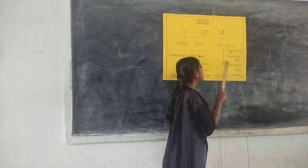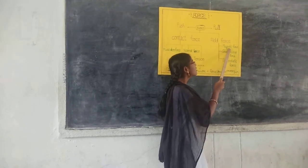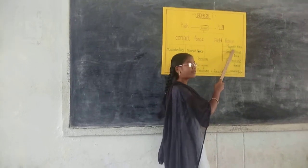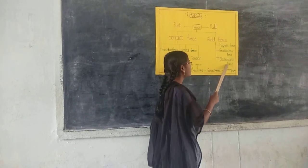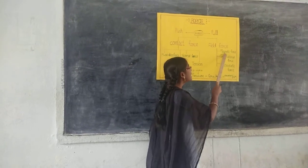Field force is of three types: one is magnetic force, second is gravitational force, and the other one is electrostatic force.